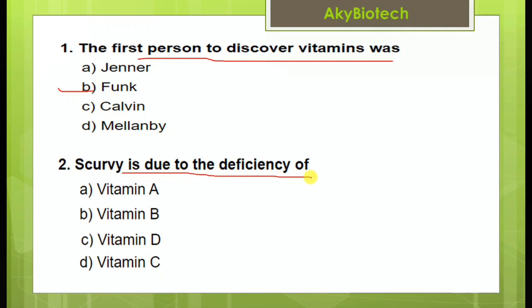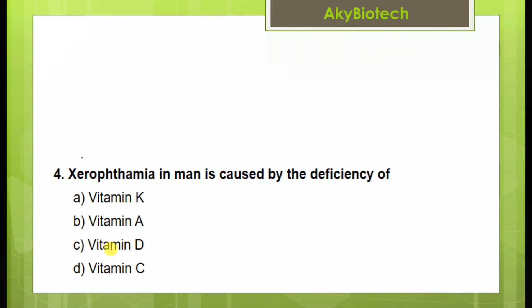Scurvy is due to the deficiency of vitamin C. Xerophthalmia in man is caused by the deficiency of vitamin A.